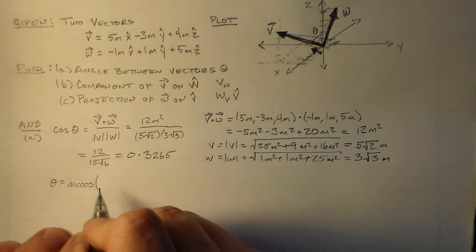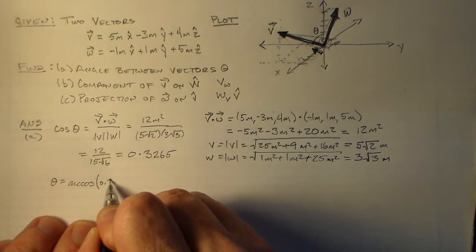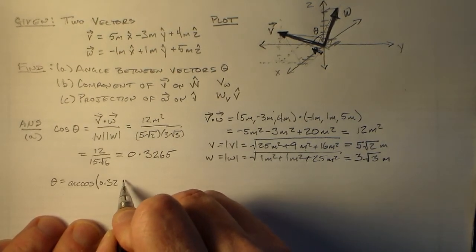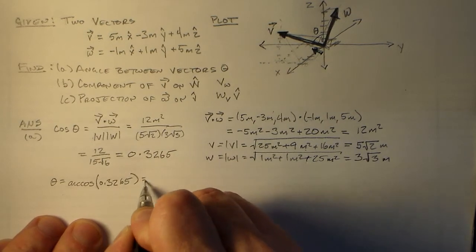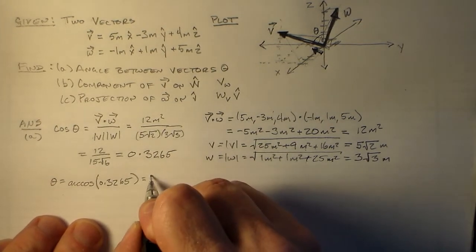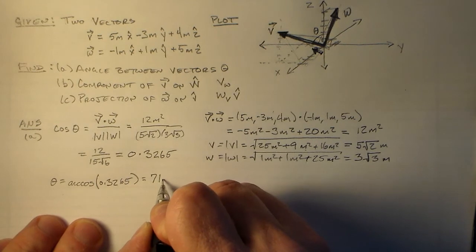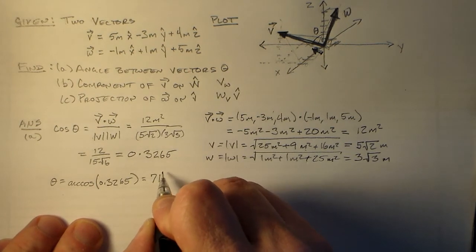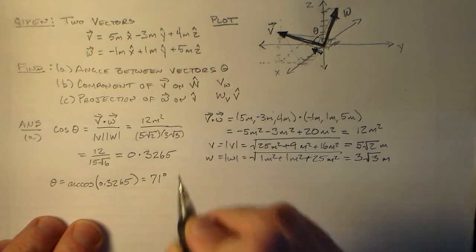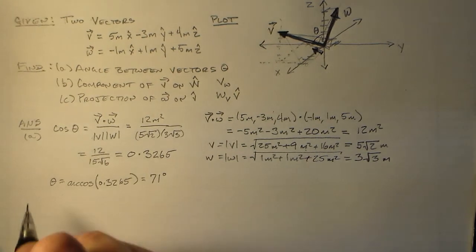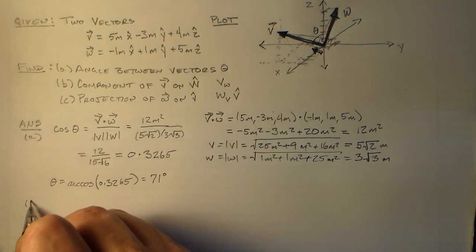And to finish up, we find the angle theta, right? And that's the arc cosine, the inverse cosine, 0.3265, which is, you will find from the calculator, or something on the order of 71 degrees. That's the vision, 71 degrees.